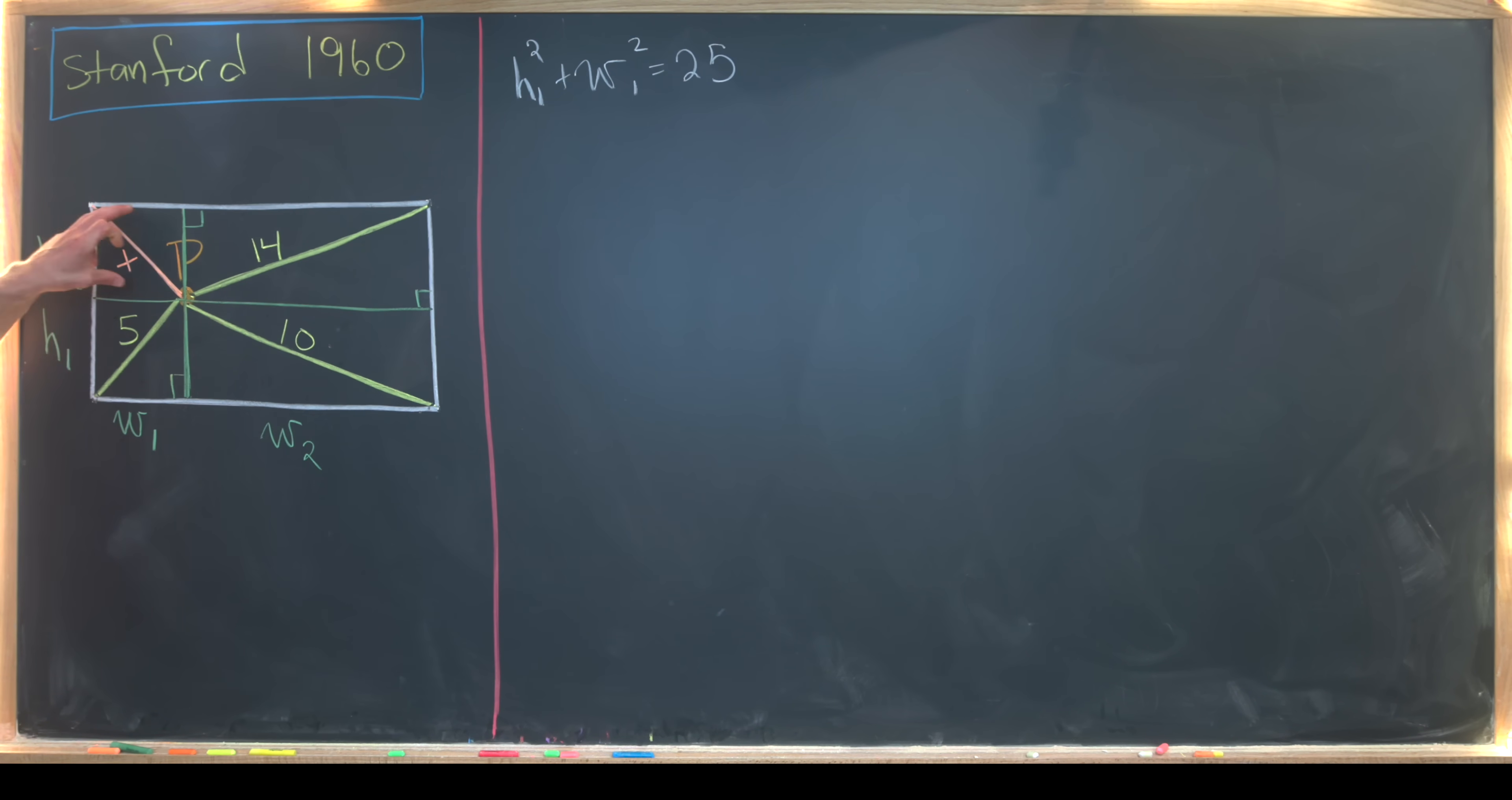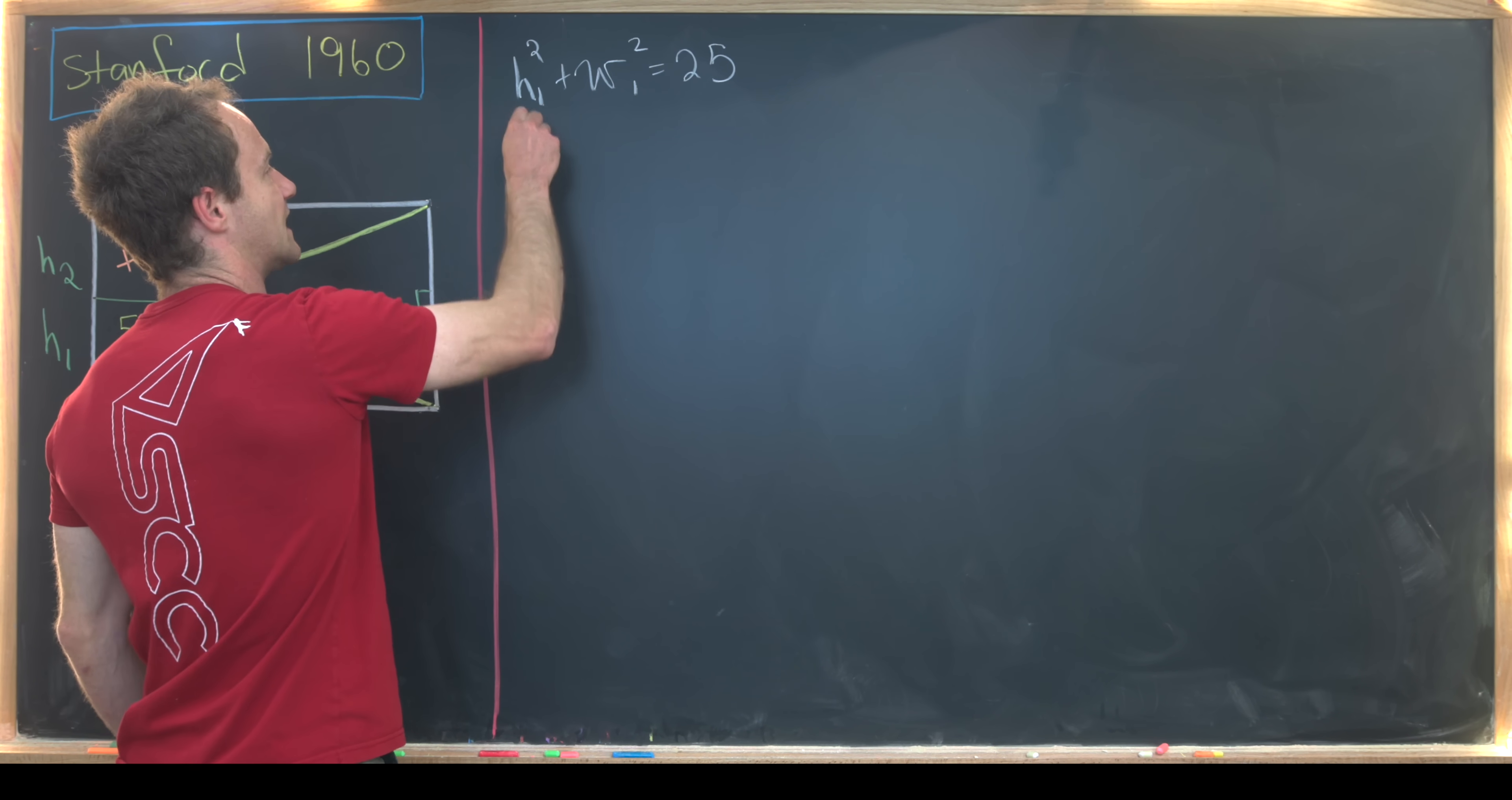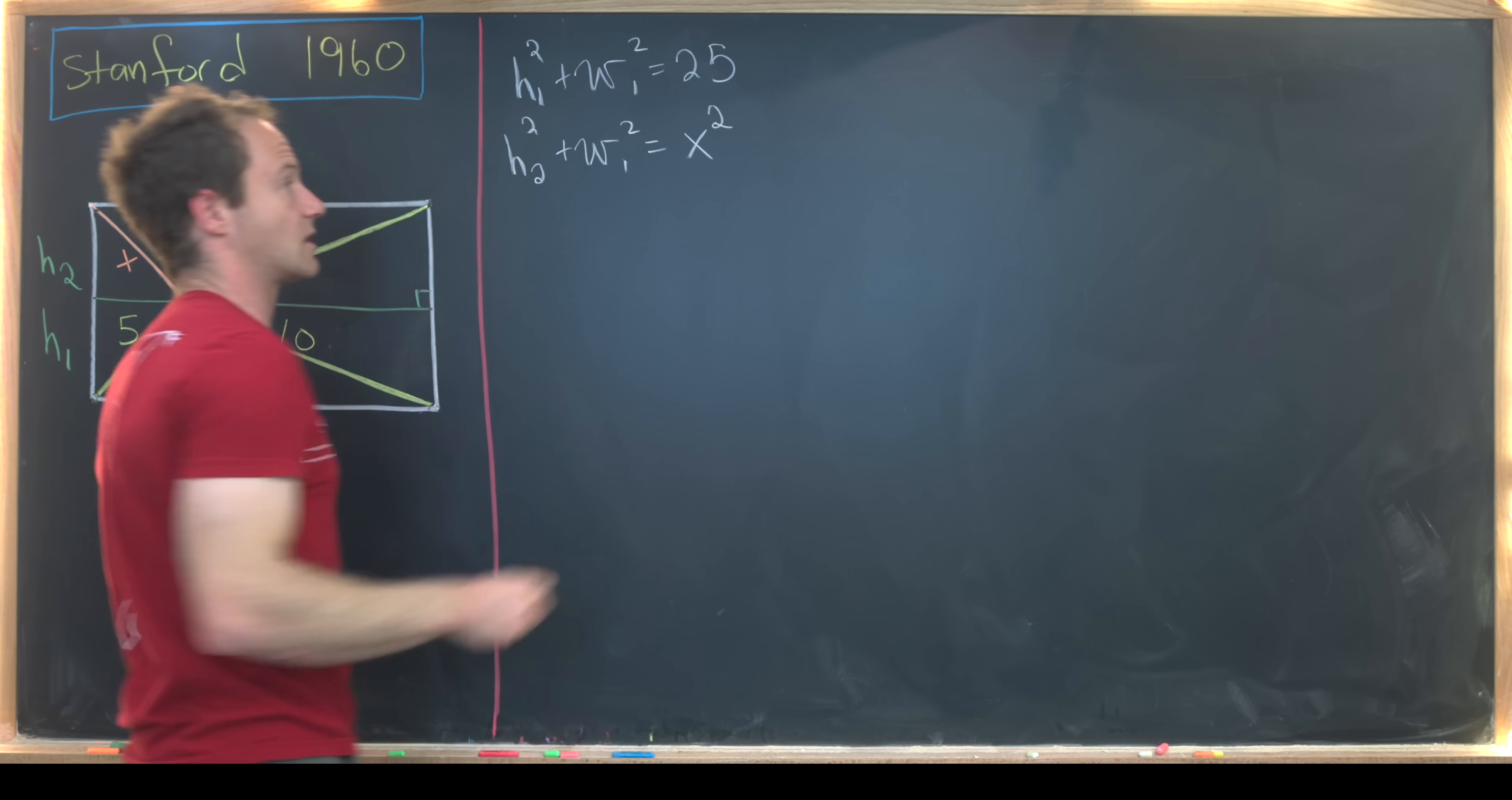Now moving up to this one, we have w1 squared h2 squared is x squared. So I'll write that as h2² + w1² = x². That's our unknown.